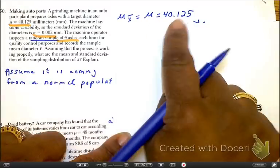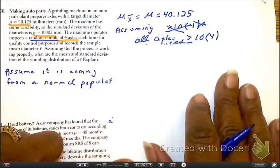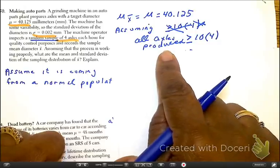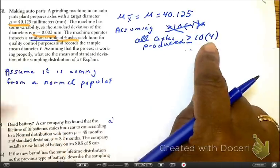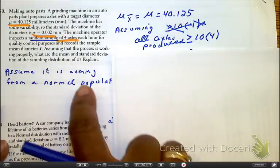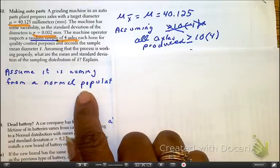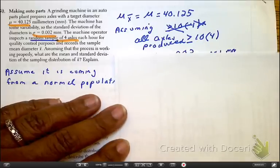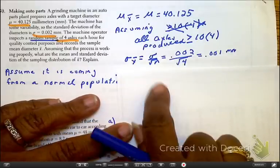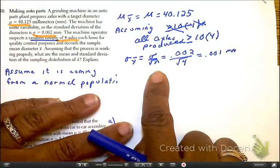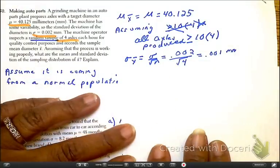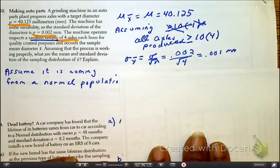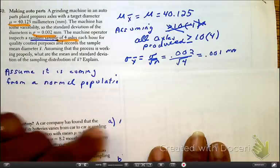With this assumption, that means we can continue on. The mean that they gave us is equal to the mean of the sample, which is the 40.12, again assuming that all axles that are produced is going to be greater than or ten times four. That's a reasonable assumption. That comes from a normal population. Next, with that being true, I can also find my standard deviation. They're asking for the mean and the standard deviation, so I've got it.